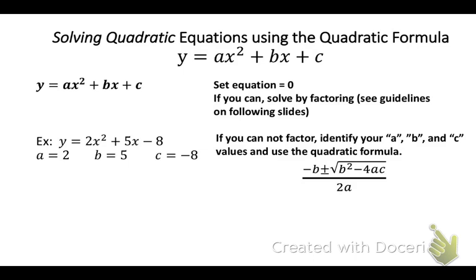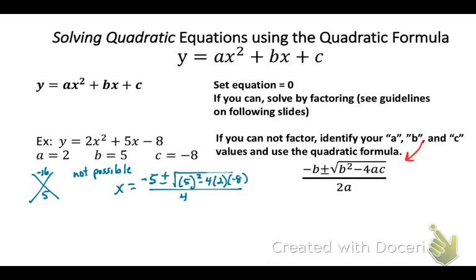Look at the example 2x² + 5x - 8. There are not two numbers that will multiply to give you negative 16 and combine to give you 5. So we can set it up in the quadratic formula. We have identified a, b, and c. So x will equal negative 5 plus or minus the square root of 5² minus 4 times 2 times negative 8, all over 4.